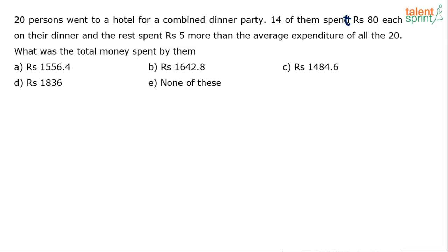Not a very complex one, you just have to frame the right equation. Let's assume that the average expenditure is a. Let's assume the average expenditure of all these 20 guys is equal to a. Now what do we know? 20 persons had gone for this dinner party.